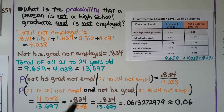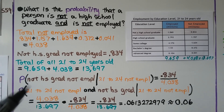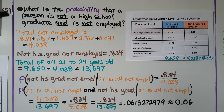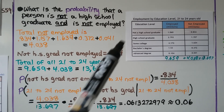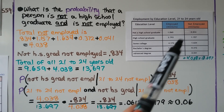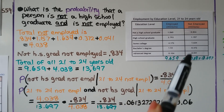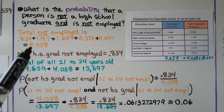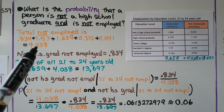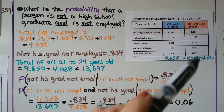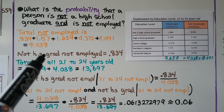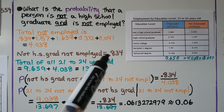Using the same table of employment by education level for 21 to 24 year olds — and this one is similar to the John Kerry in Dallas County example — what is the probability that a person is not a high school graduate and is not employed? The first thing we do is total all the not employed column: we total these all up and get 4.038. Not a high school grad and not employed is 0.834.